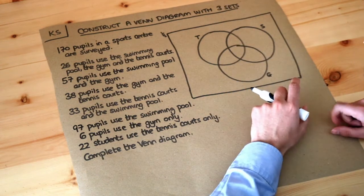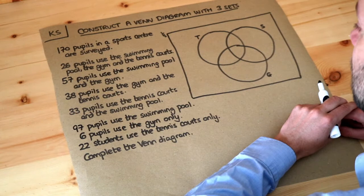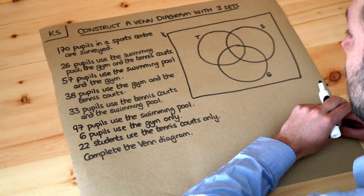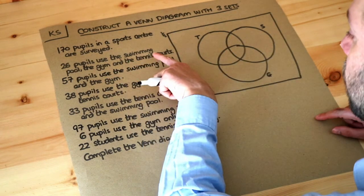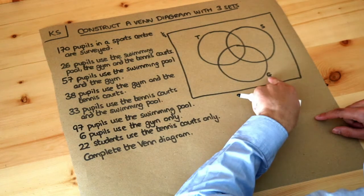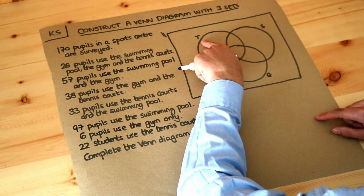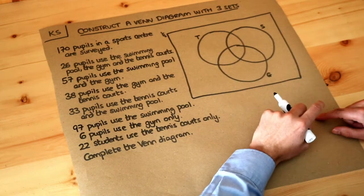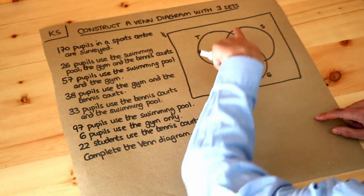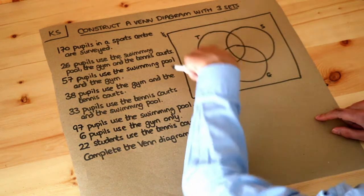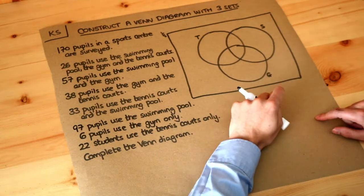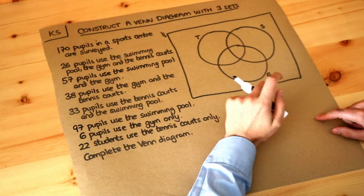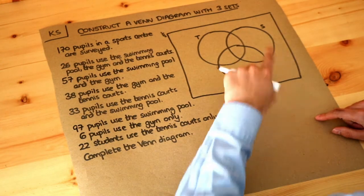In this particular question we've got 170 pupils in a sports centre, and those students can use a swimming pool, the tennis courts, or the gym. We use G for gym, T for tennis courts, and S for swimming pool. The T circle represents all the students who use a tennis court, and we can also have the overlap of regions.